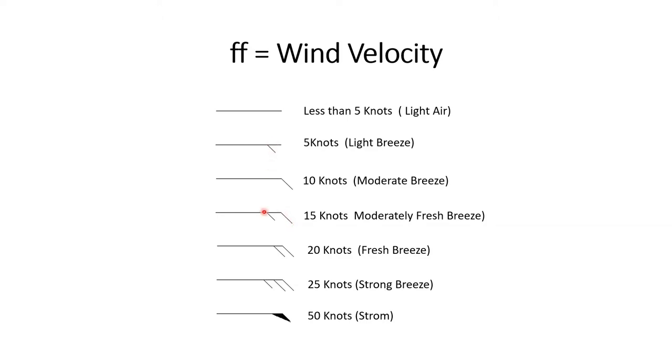Then 10 plus 5, 15 knots which represent moderately fresh breeze. 2 long, that is 10 plus 10, 20 knot fresh breeze. 20 plus 5, that is 25 knot strong breeze. In case of 50 knot, it is a storm. It is disastrous and in this case, a small triangle covered with black color are found in weather map.